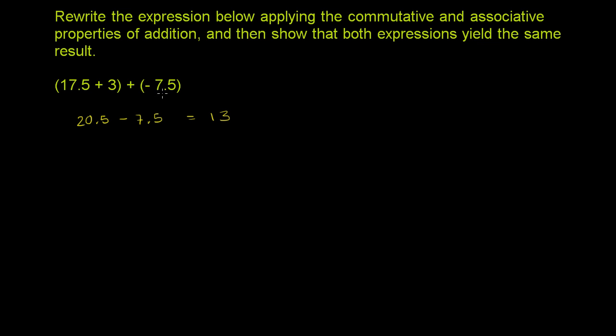So let's just move the numbers around. We could do all sorts of crazy things. Let's just change the order here. We could make this negative 7.5 plus 17.5 plus 3. We could keep the parentheses just like that, so we would have essentially just changed the order of this expression right over here.